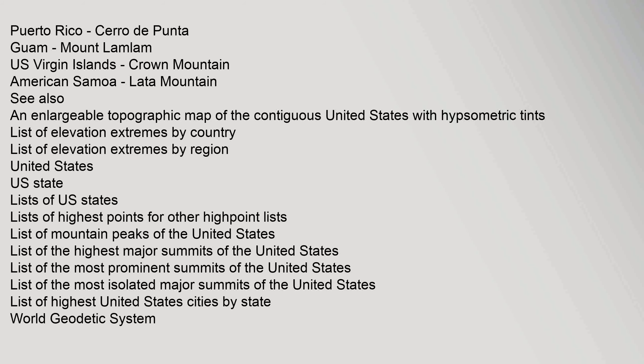National Geodetic Vertical Datum of 1929; North American Vertical Datum of 1988. References: ABC Elevations and Distances in the United States, Reston, Virginia, USGS, April 29, 2005. Archived from the original on 20 November 2010. Retrieved October 24, 2011.